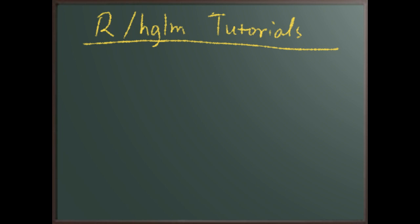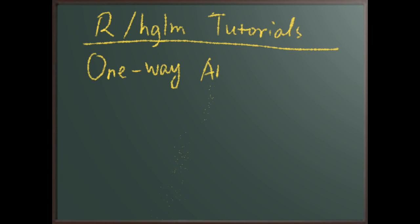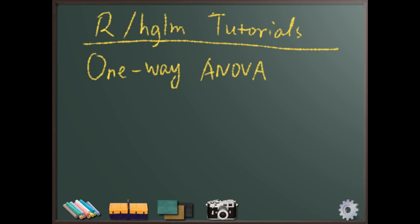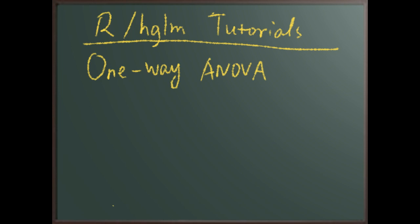Specifically, it's called a one-way analysis of variance. What that means is that we're doing analysis of variance for a particular response variable — we try to partition the variance into something we can explain and something we can't explain. 'One-way' means that we have a single factor involved.